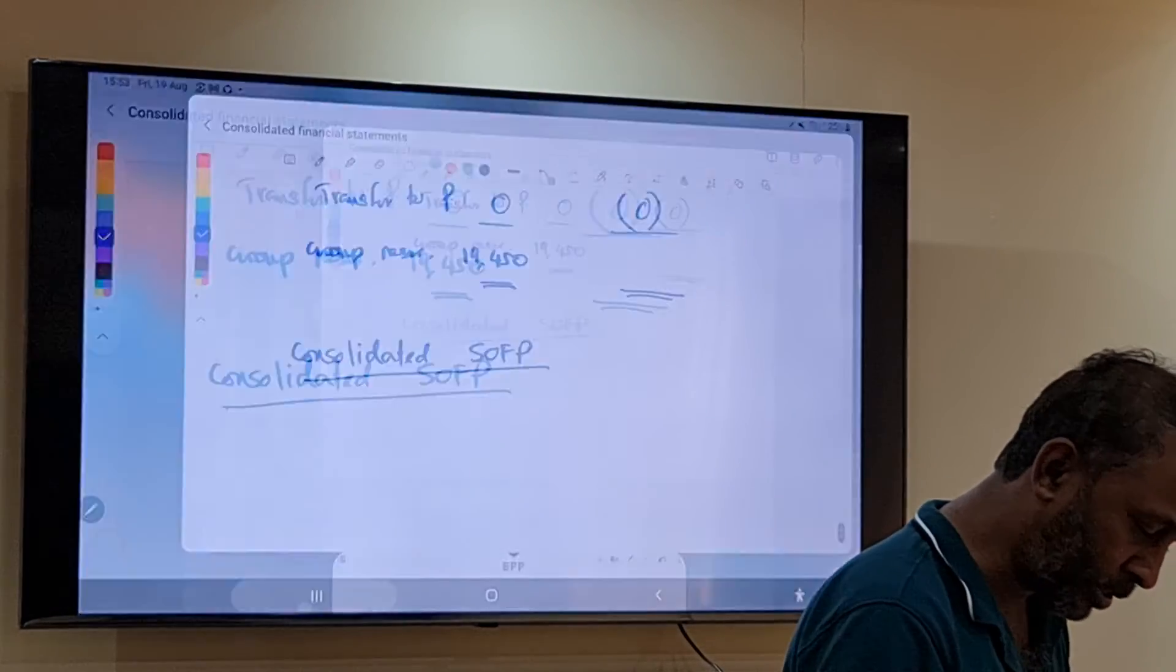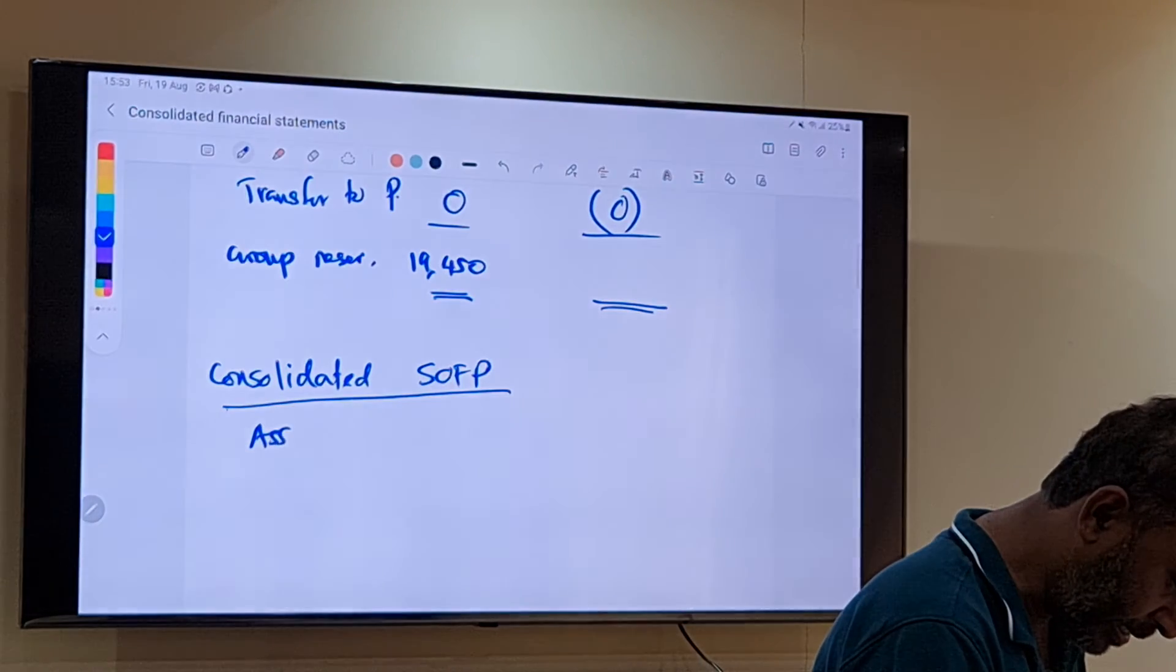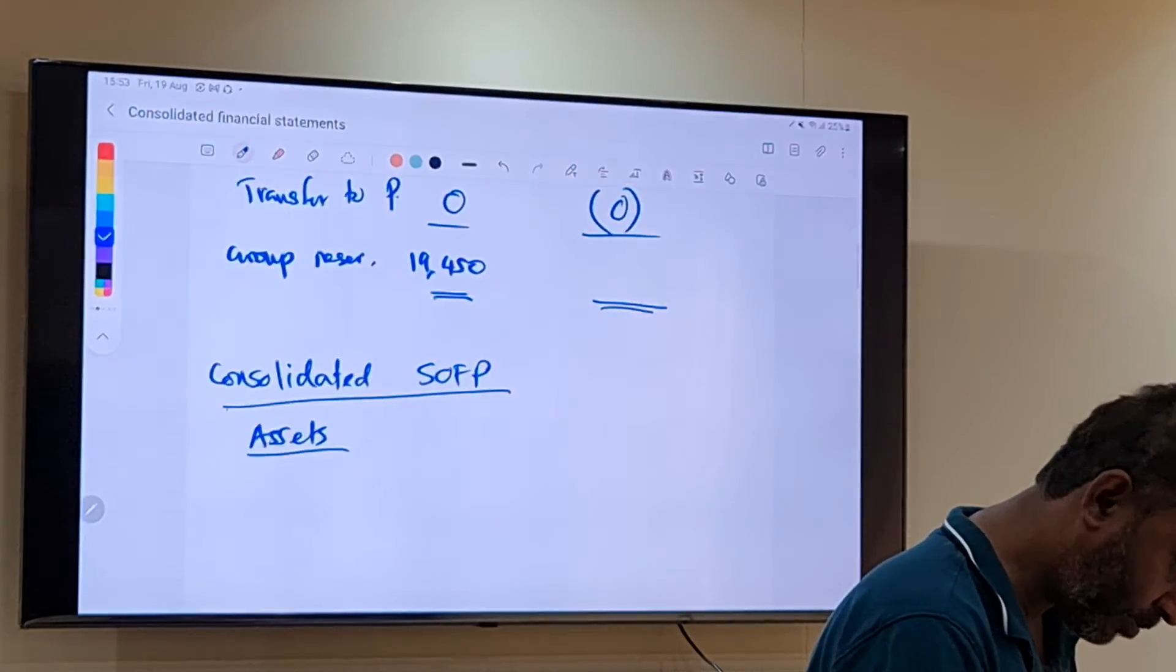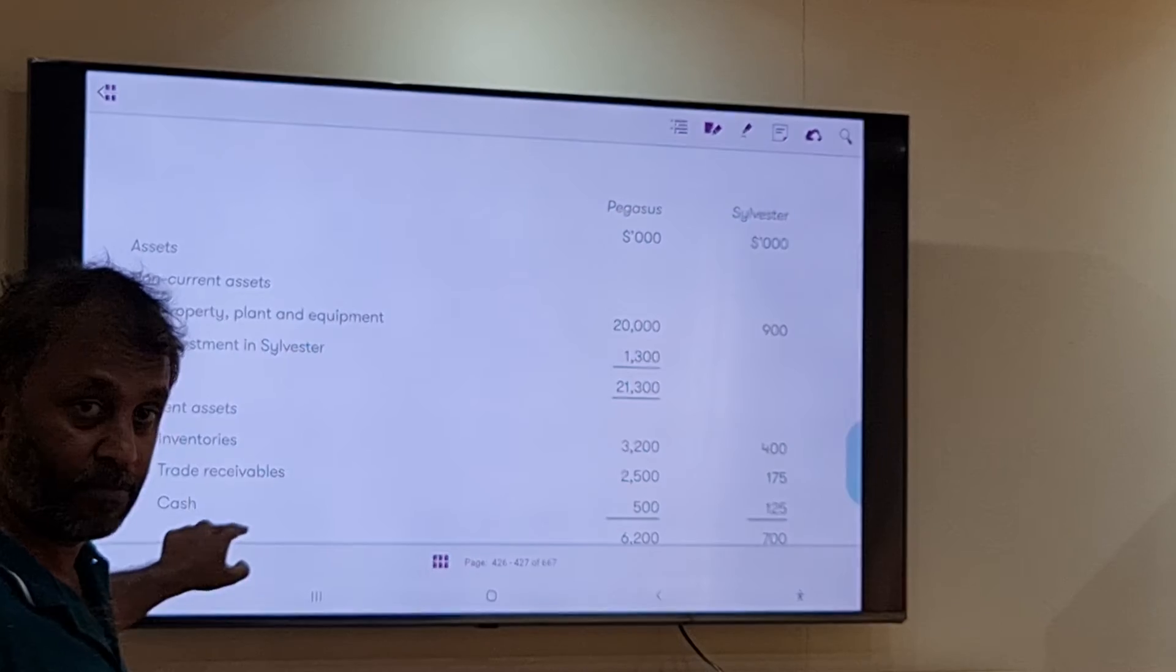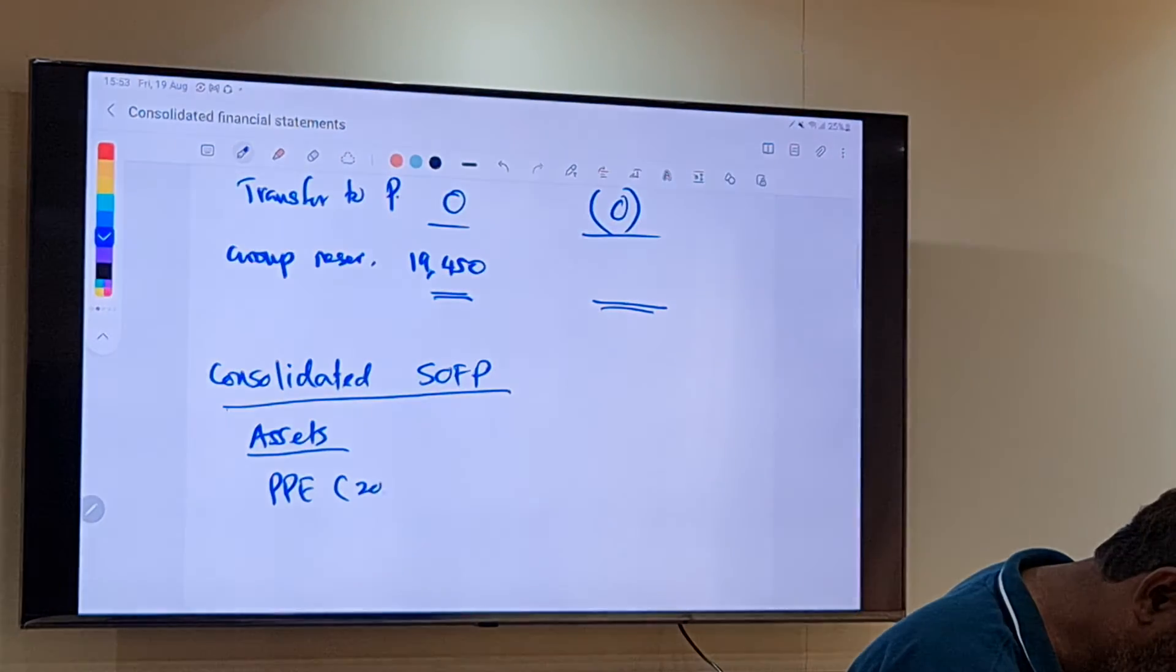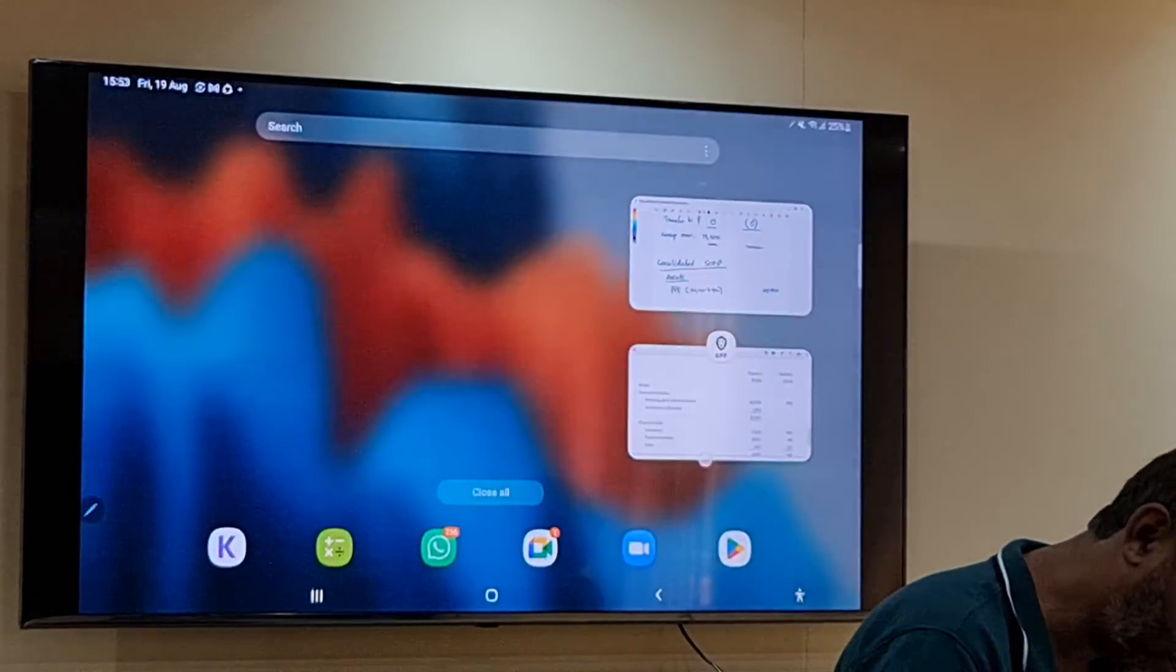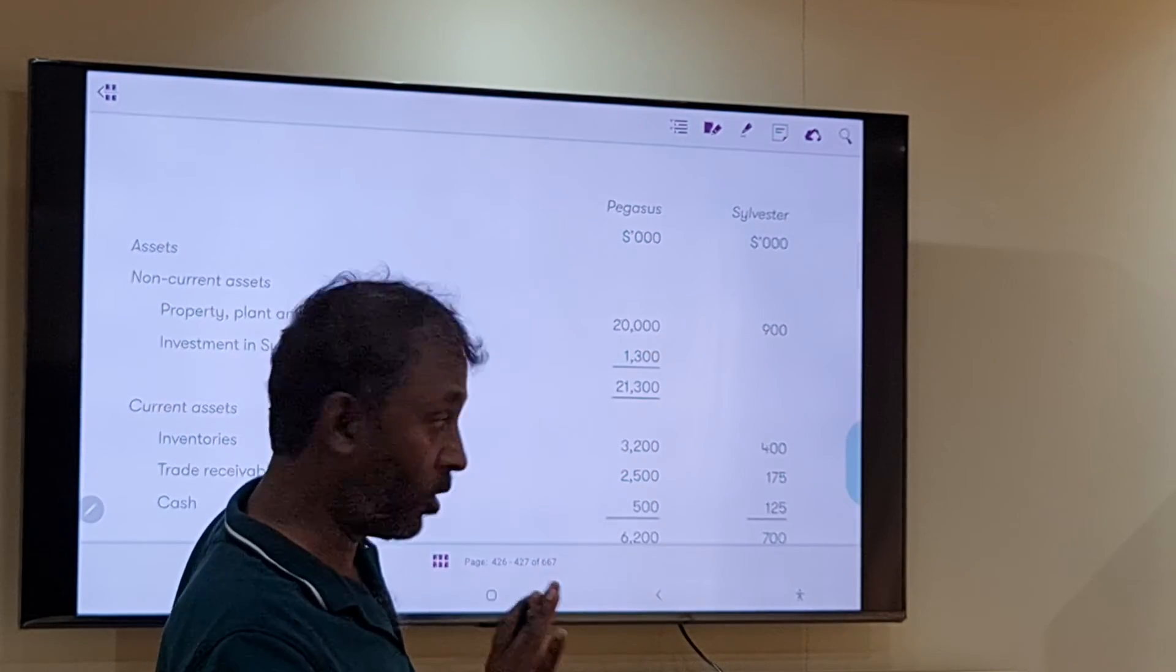Now we prepare consolidated balance sheet. We start with assets. We will follow the same format. What is the next line item here? PPE. What I told you? We should do it line by line. How much here? 20,000. How much here? 900. So it will be 20,000 plus 900, that's 20,900. Investment in Silver Star, do I need to take it? No, that we already ticked off.